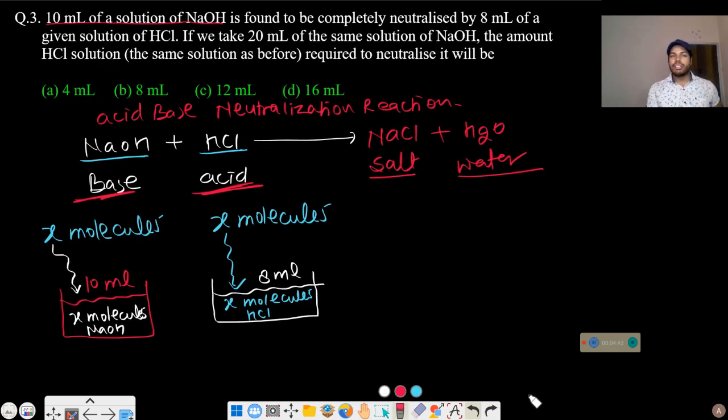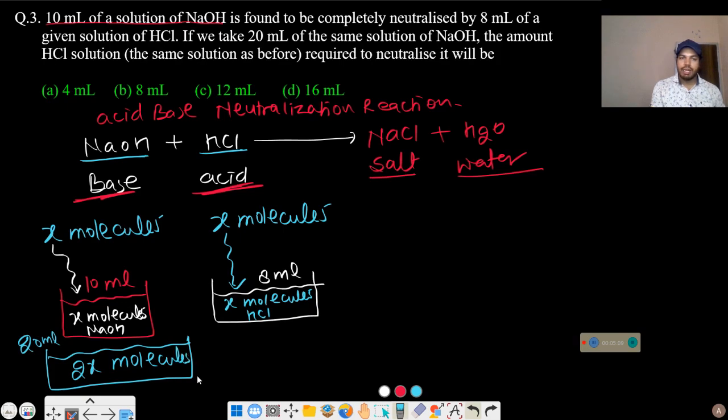Now, if we double the NaOH to 20 ml, we will have double the molecules, which is 2X molecules. The solution volume doubles, so 8 ml should also double to 16 ml.